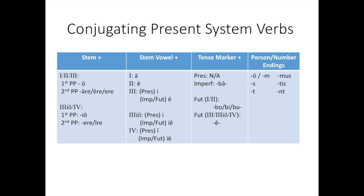You take the stem, plus the stem vowel, plus a tense marker, and then your person and number endings. For present, imperfect, and future, your person and number endings are always O, S, T, mus, tis, nt. But sometimes first person singular can be an M, like in imperfect or the future for third and fourth conjugation verbs.